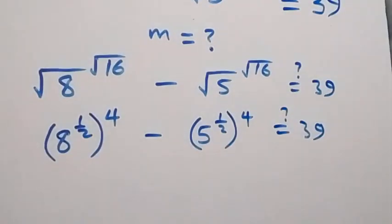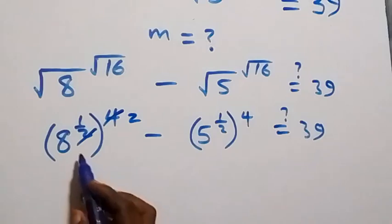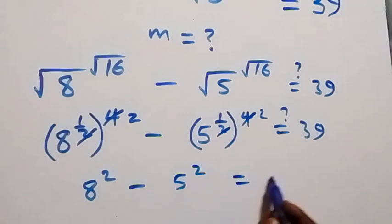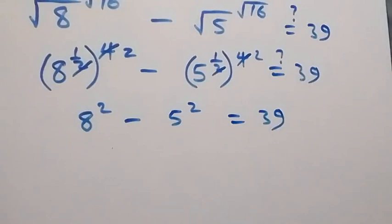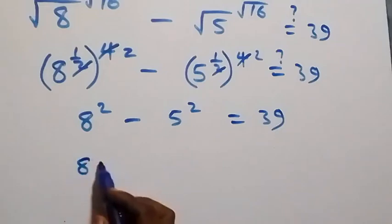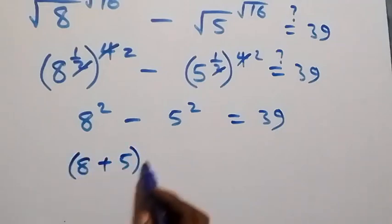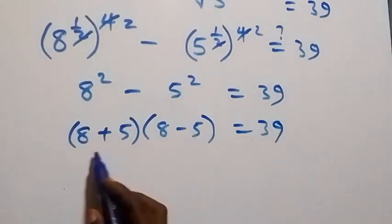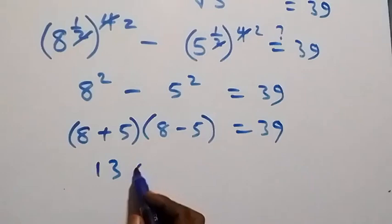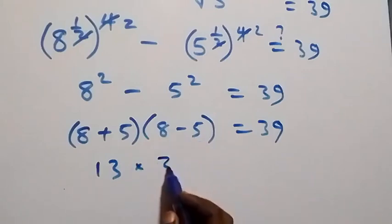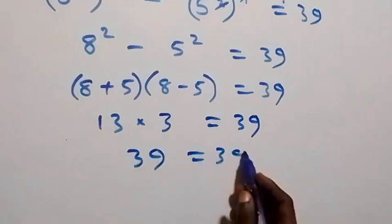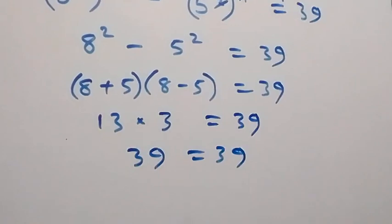The powers multiply: 8 raised to power 2 minus 5 raised to power 2 equals 39. This gives 64 minus 25, or we write it as (8 + 5)(8 − 5) equals 39. That is 13 times 3 equals 39, and 39 equals 39. The left hand side equals the right hand side, confirming m equals 16.